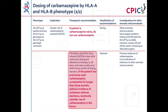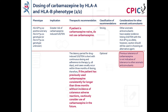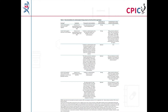If the patient has previously used carbamazepine consistently and without incident for at least 3 months, further use of carbamazepine can be considered with caution. This is an optional recommendation. Note that tolerance to carbamazepine in a patient is not indicative of tolerance to other aromatic anticonvulsants. The dosing recommendations for carbamazepine can be found in Table 2 of the guideline, with detailed footnotes at the bottom of that table.